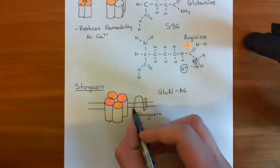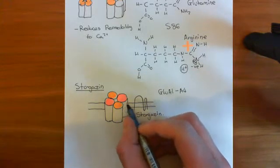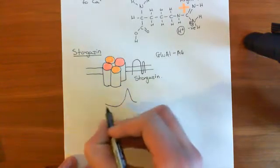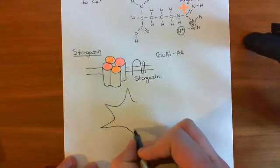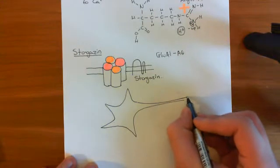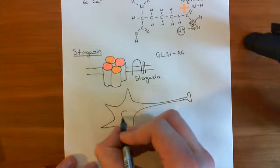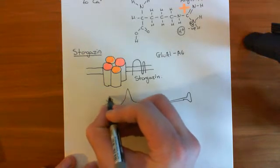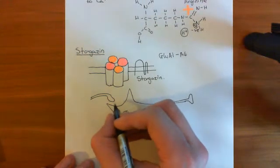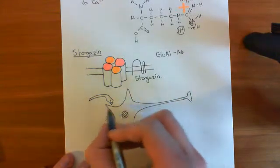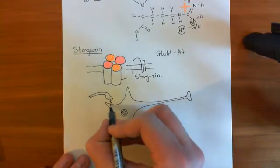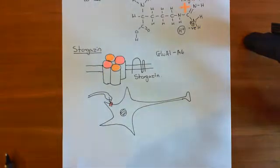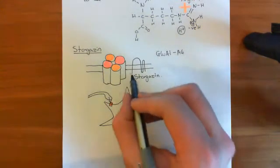Stargazin is important because it binds and associates with the main structure of the AMPA receptor, and it's involved in targeting these AMPA receptors to the postsynaptic membrane of neurons. For instance, in a neuron with a cell body, dendrite processes, an axon, and an axon terminal, you want the AMPA receptors targeted to the dendrites — to the postsynaptic membrane — because other neurons synapsing onto you will be releasing glutamate, and you need to respond. Stargazin is believed to be involved in targeting AMPA receptors to the correct place.